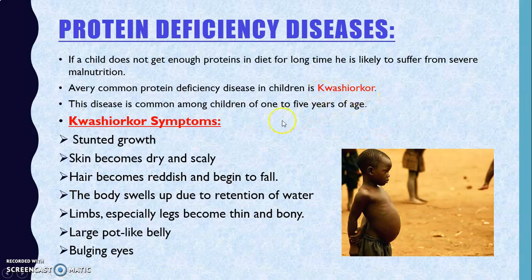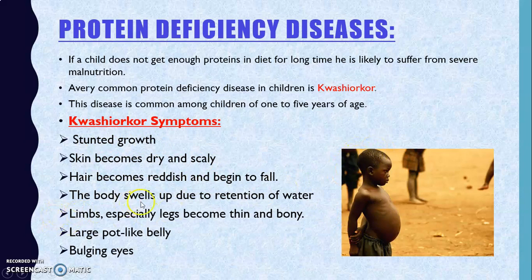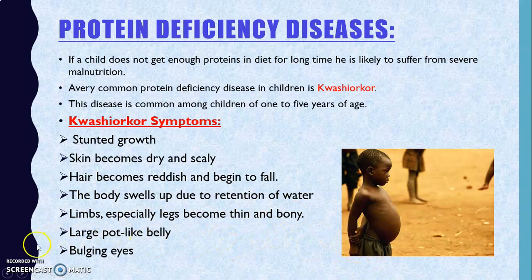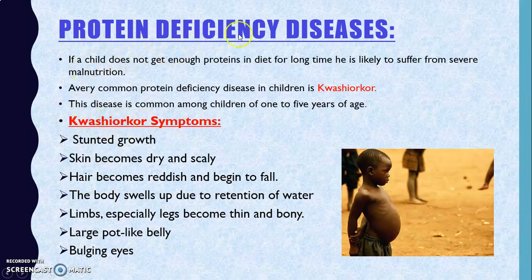Other symptoms of Kwashiorkor include stunted growth, dry and scaly skin, reddish hair that falls quickly, body swelling due to water retention, thin and bony legs, and a large pot-like belly with bulging eyes. All these symptoms occur because of protein deficiency in the diet.